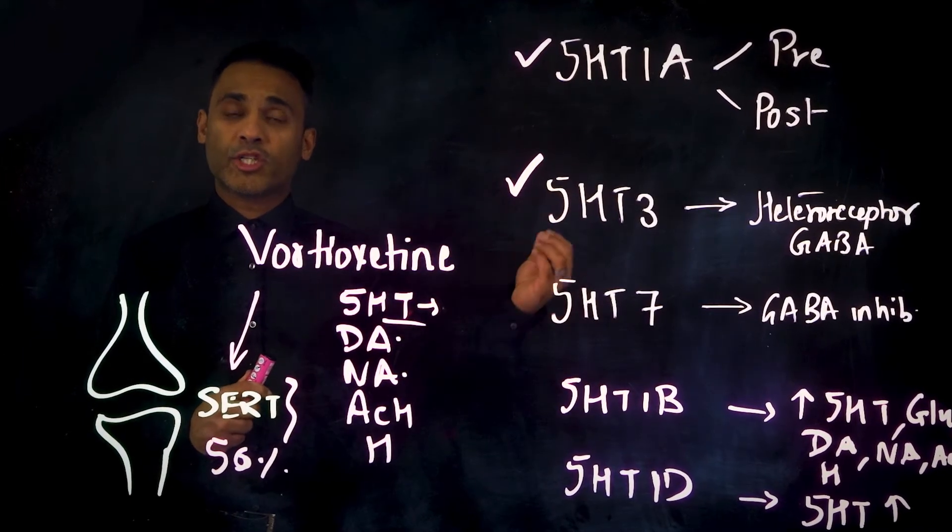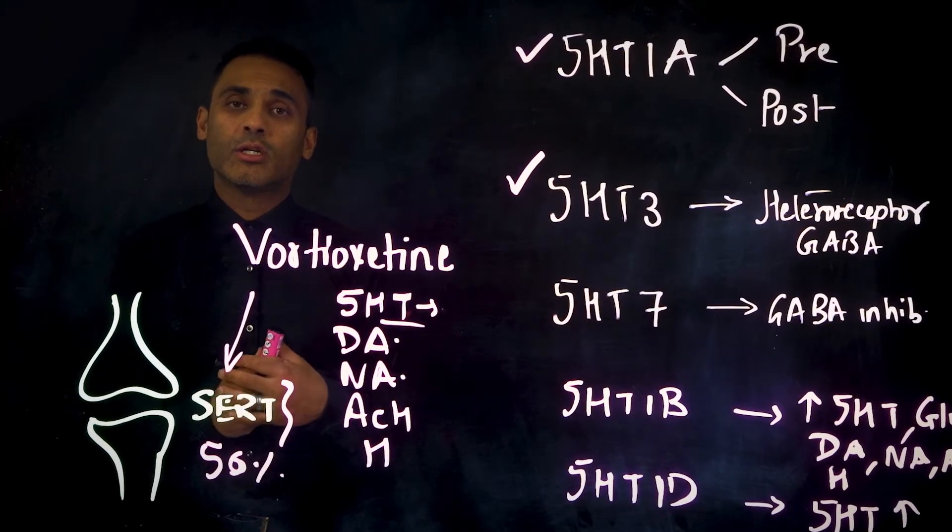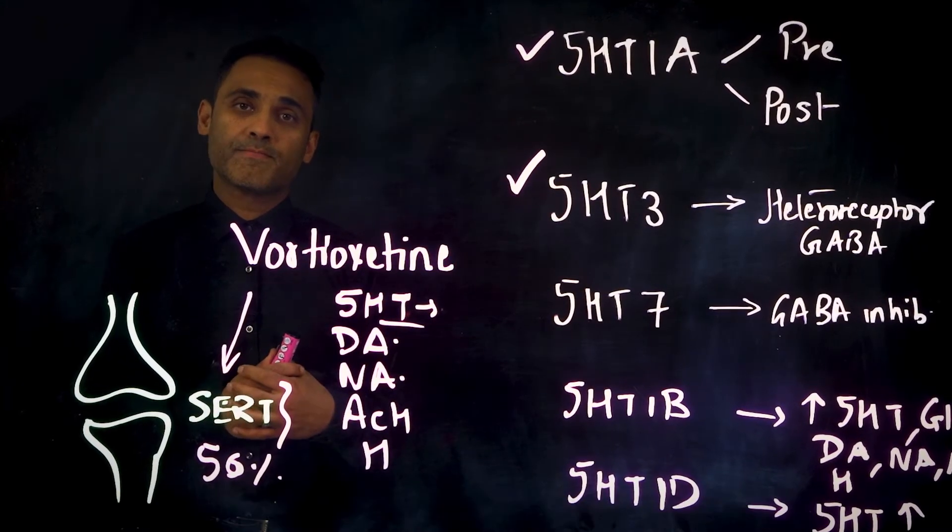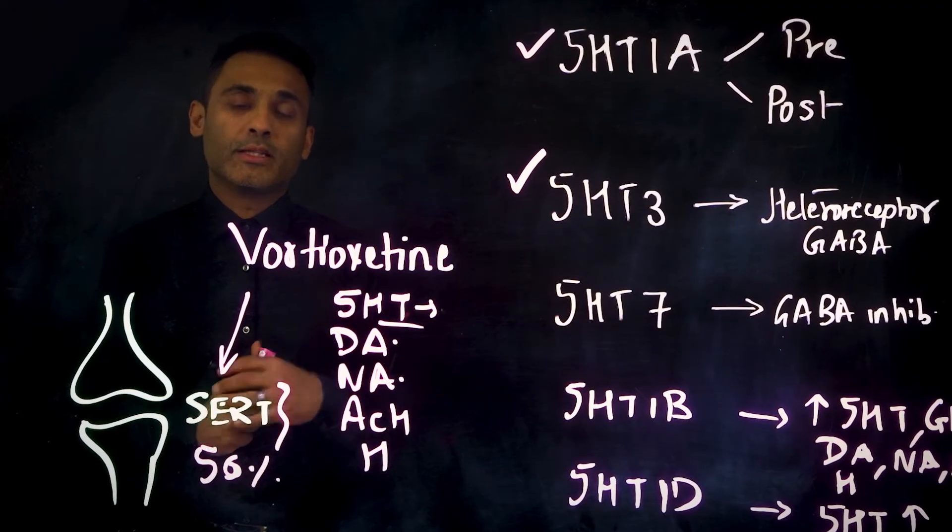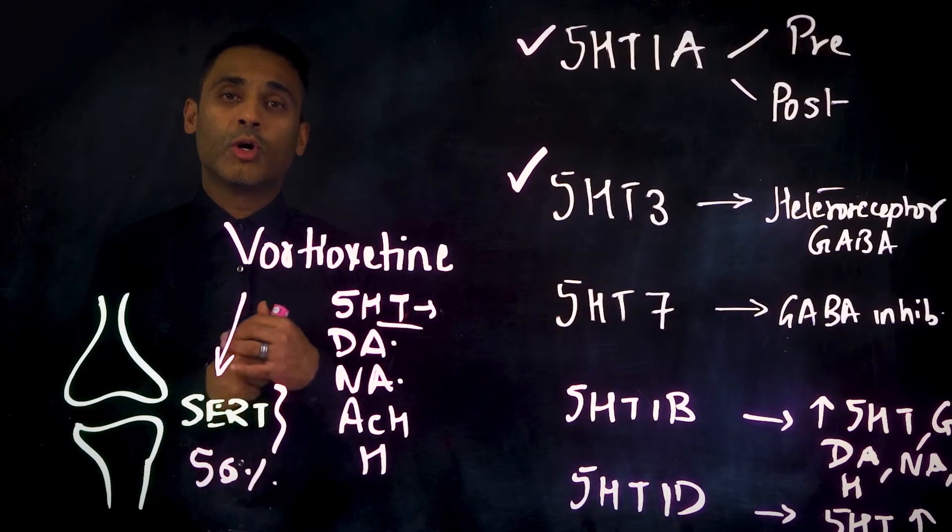This is postulated to provide pro-cognitive benefits in addition to mood-enhancing effects, antidepressant properties. These 5-HT3 receptors are also situated in the dorsal horn neurons.